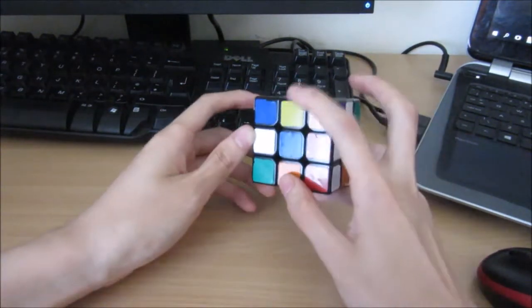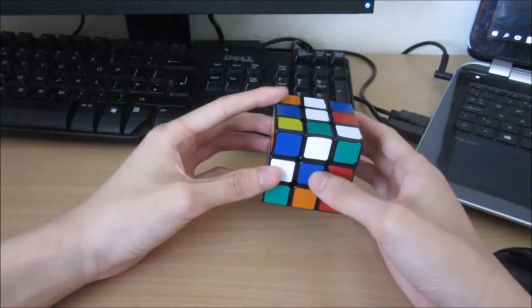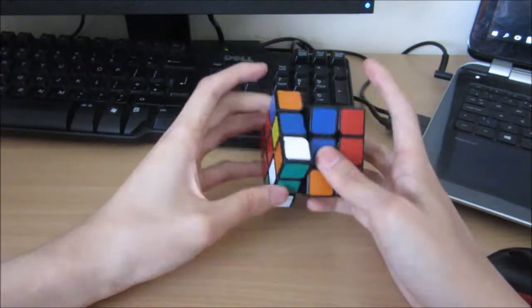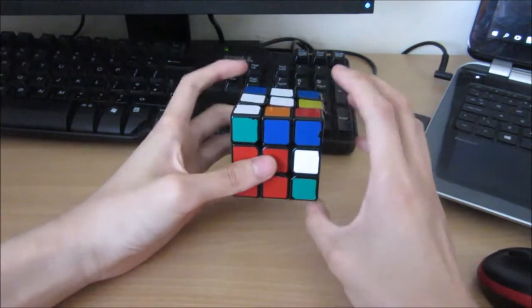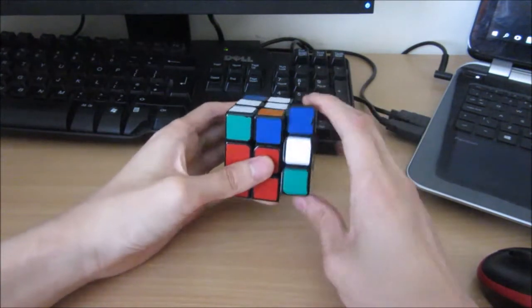Okay, so I have four bad edges. Here, here, here, and here. And I would just do it like this. Flip these two. Oh, sorry. Flip these two. Then flip these two.